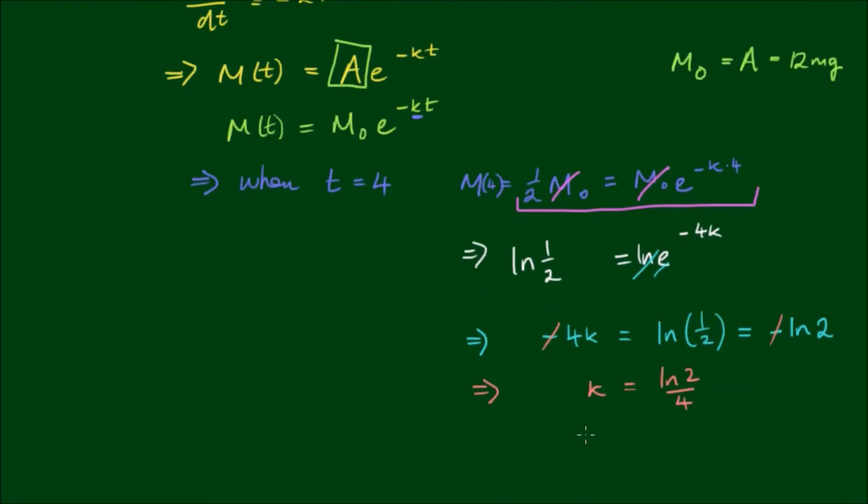Giving us k is equal to log of 2 divided by 4. And you'll find this is generally how we work out k given a half-life. k is simply equal to the natural log of 2 divided by lambda, where lambda equals half-life. So the log of 2 over 4 is about 0.173.